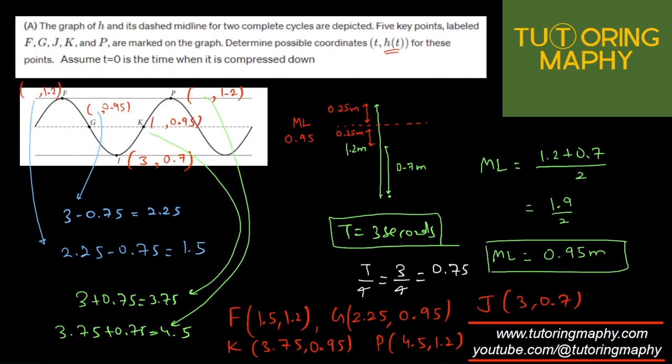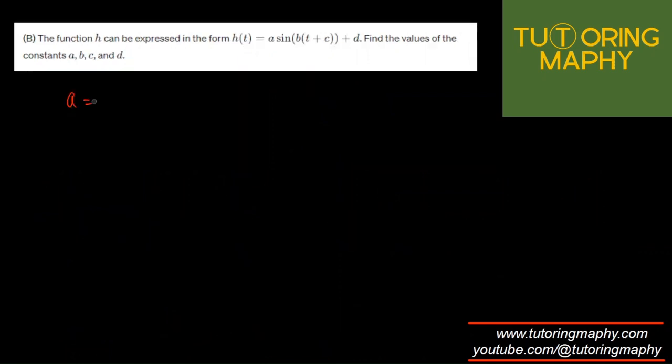Let's move on to the next question. They are asking to express this as a sinusoidal waveform. We already have the value of amplitude, which was 0.25. We already have the midline, which was 0.95 meters. We already have the period. So 2π over B will be equal to 3, so B will be equal to 2π over 3.